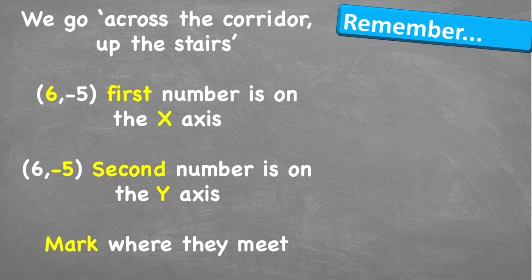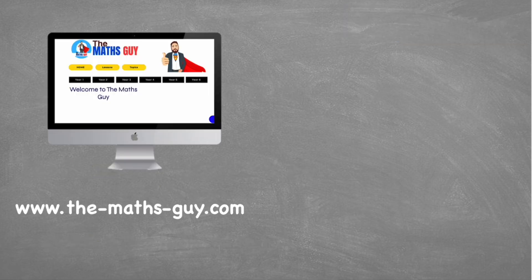That's everything you need to know about plotting coordinates on a graph. Things to remember: we always go across the corridor before we go up the stairs, meaning we go across the x-axis before we go up the stairs. The first number in the coordinate is on the x-axis, and the second number in the coordinate is on the y-axis, and then we just mark where they meet.